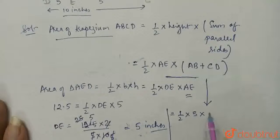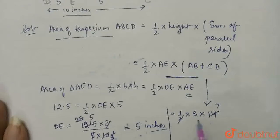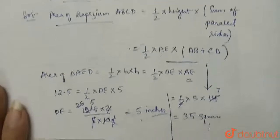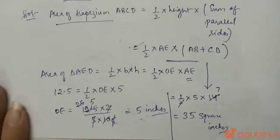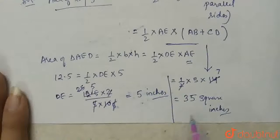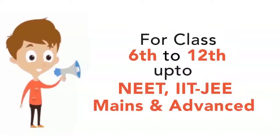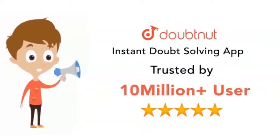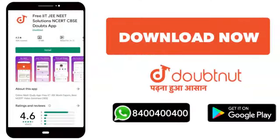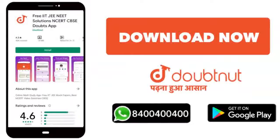4 plus 10 equals 14. Half times 5 times 14: 5 times 7 is 35. So 35 square inches is the area of the trapezium. This is our answer. Thank you.